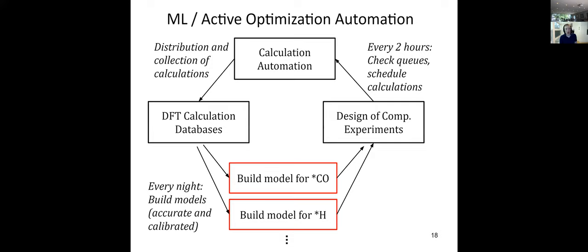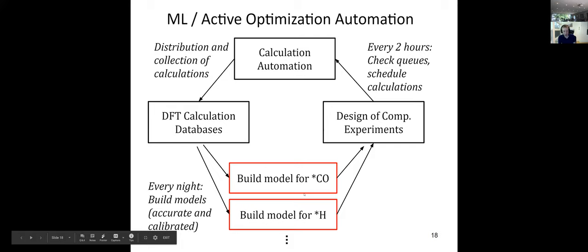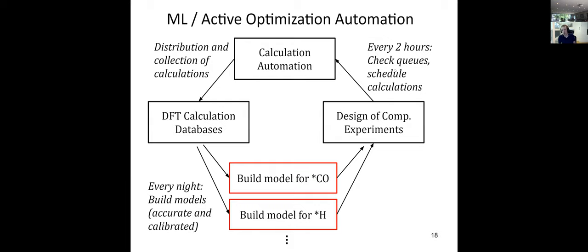All of this lives in a loop that has been running for the past couple of years. Every night, computers at NERSC at LBL look at all the calculations that have been done in the databases, then build models for every intermediate we're interested in — CO, hydrogen, OH, whatever — updated every night as we have more data. Over the course of the next day, we continuously try to solve a design of computational experiments problem. Every two hours we check the queues; if there's spare throughput, we figure out what other points might be interesting and submit them in an automated fashion to NERSC and our CMU servers.